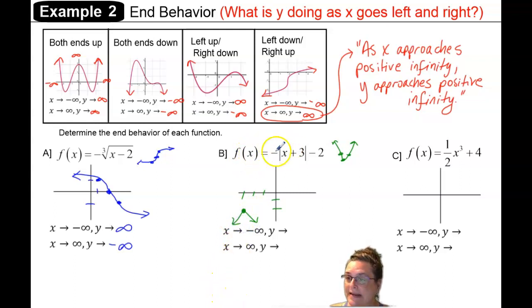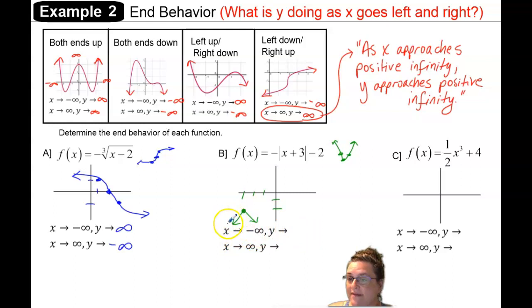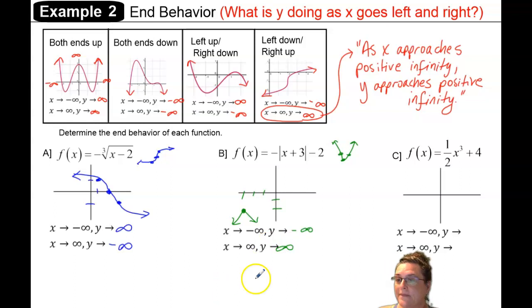That gives us a rough sketch of f(x) = −|x + 3| − 2. For the end behavior: as x is approaching negative infinity, the y on the left end is headed down, so y is approaching negative infinity. Then as x approaches positive infinity on the right, the y is also approaching negative infinity.